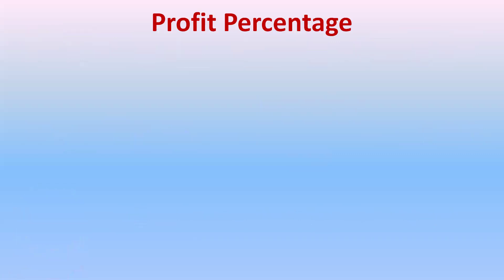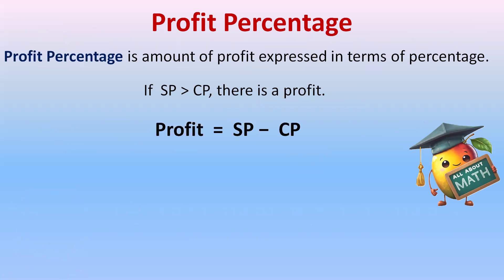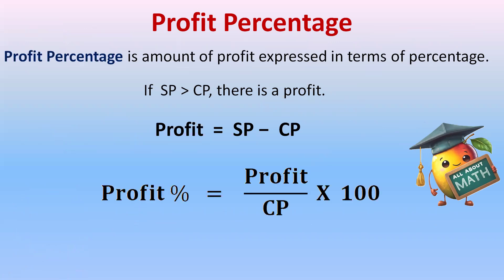What is profit percentage? Profit percentage is the amount of profit expressed in terms of percentage. If selling price is greater than cost price, there is profit, and the formula for profit is selling price minus cost price. The formula for profit percent is profit upon cost price multiplied by 100.